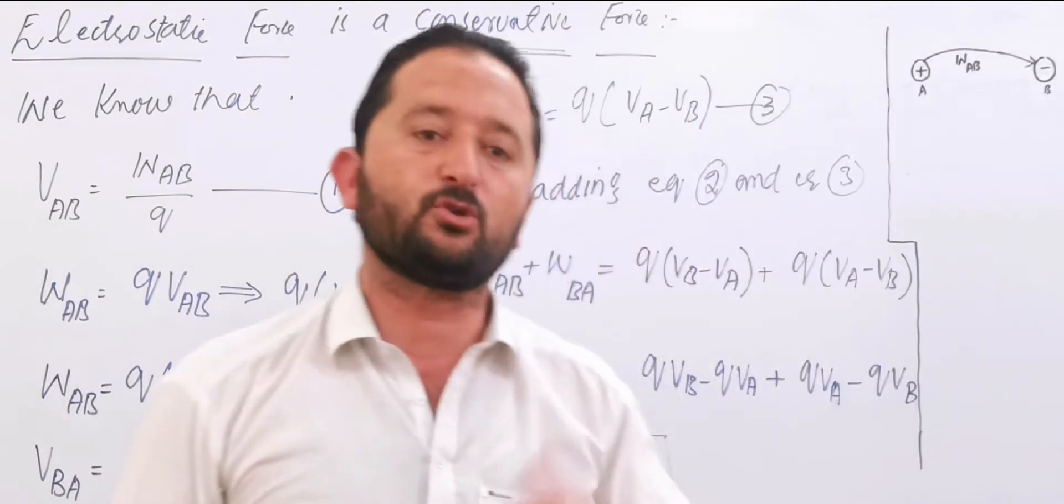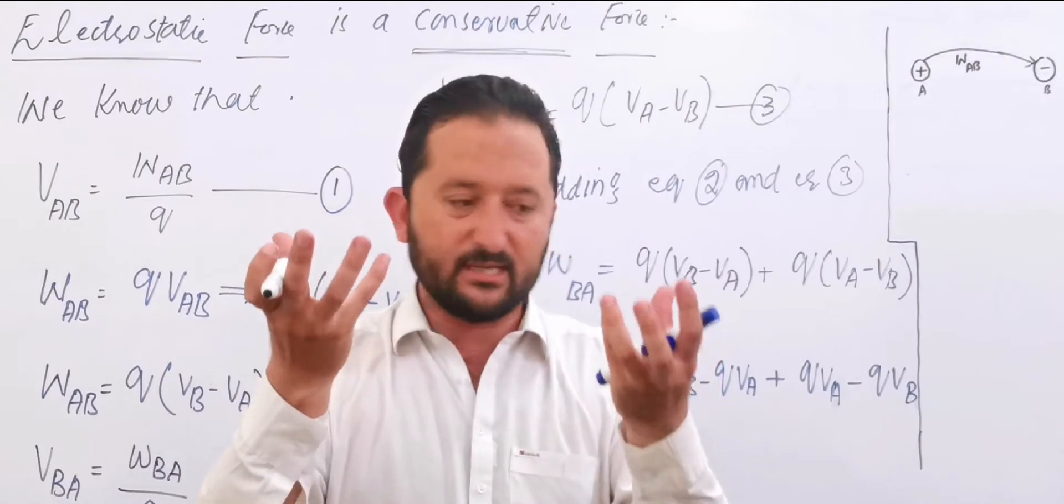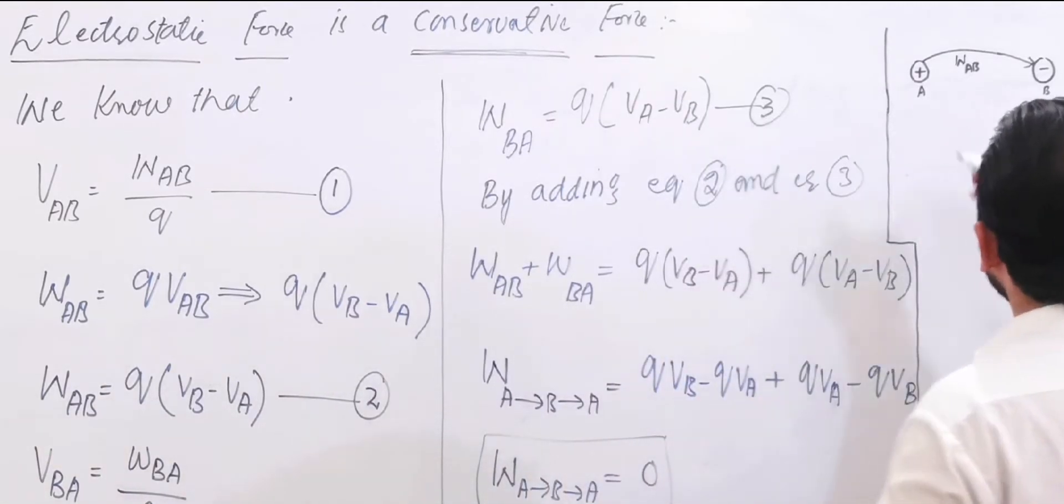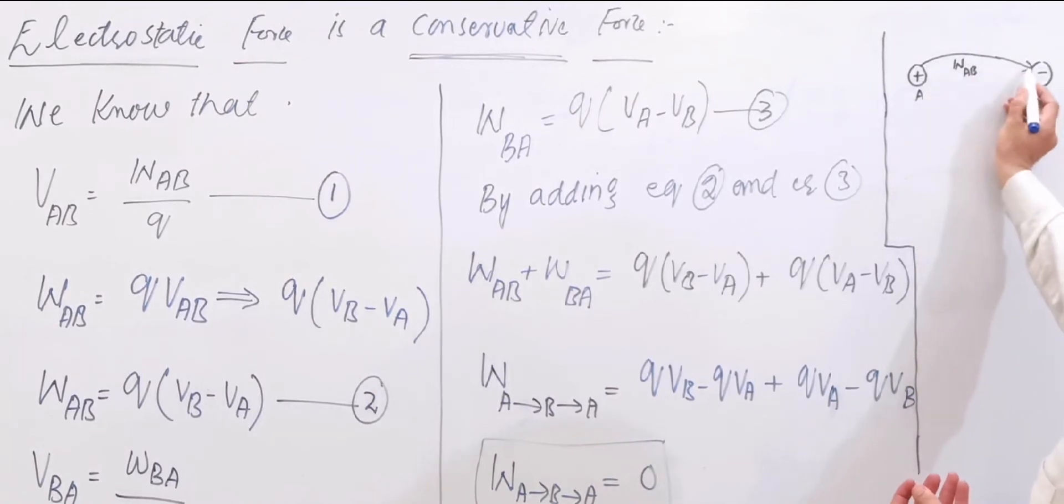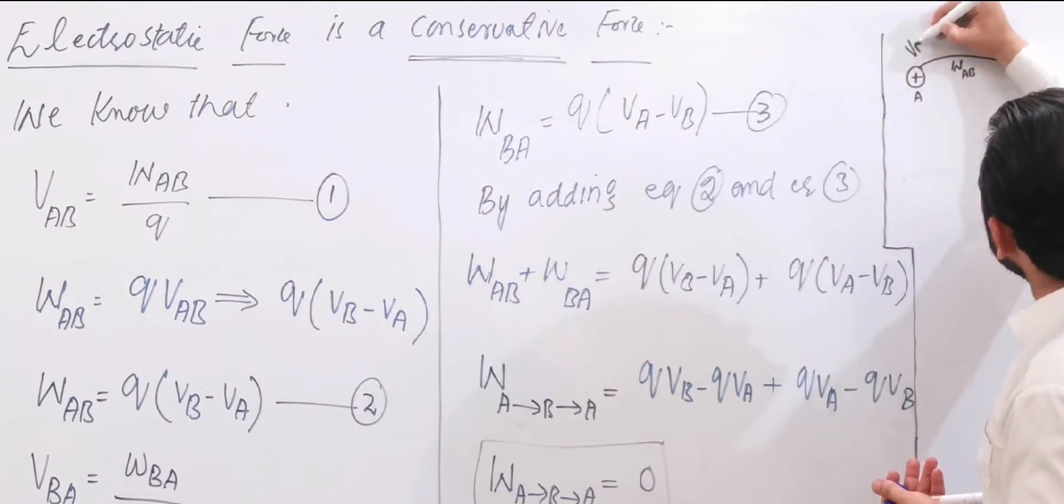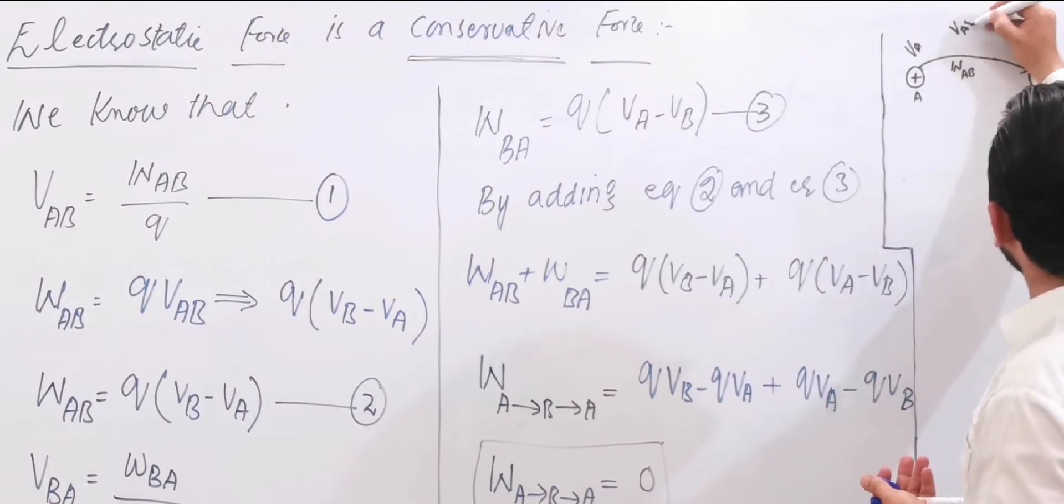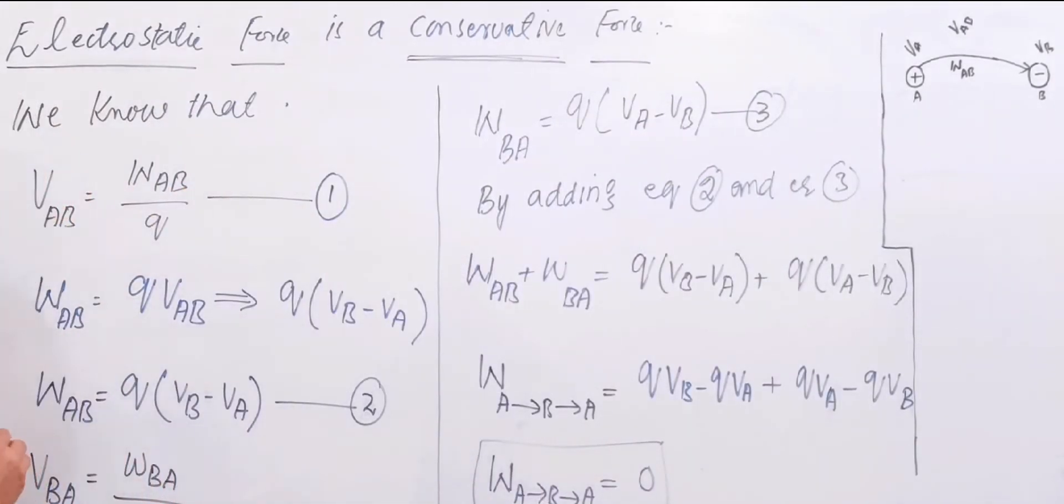For a negative charge, high potential to lower potential. If you have a charge body, the negative charge from A point to B point, the potential is V_A and the potential is V_B. If you work from A to B, work per unit charge. If you charge plus the V_A, then work is the potential.